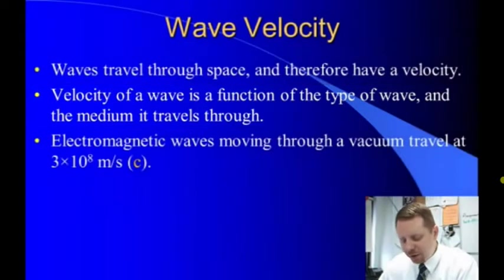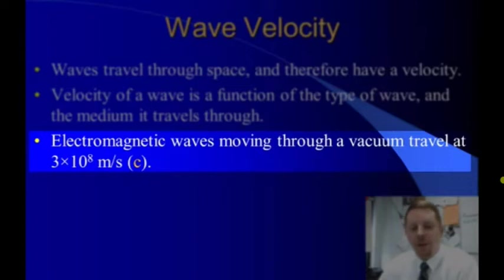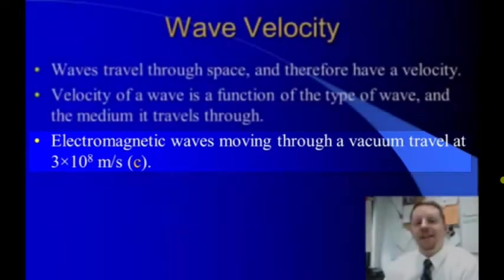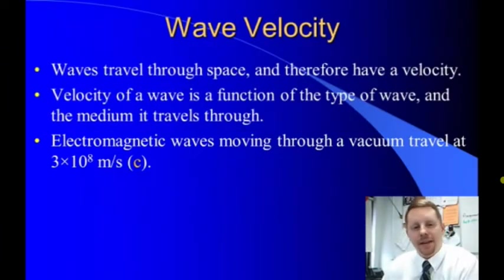For example, electromagnetic waves — things like light moving through a vacuum — travel at three times ten to the eighth meters per second. That's such an important and common number in physics that we give it a special abbreviation, lowercase c. C is the speed of light, or the speed of electromagnetic waves in a vacuum: three times ten to the eighth meters per second. Really, really fast.